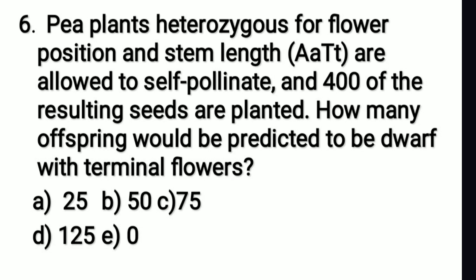Pea plants heterozygous for flower position and stem length are allowed to self-pollinate. 400 of the resulting seeds are planted. How many offspring would be predicted to be dwarf with terminal flowers? The right answer is option A: 25. Both are recessive traits, so in the F2 of a typical dihybrid cross, 1 out of 16 offspring is recessive for both traits. 1/16 of 400 = 25.